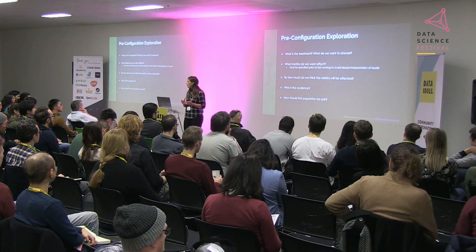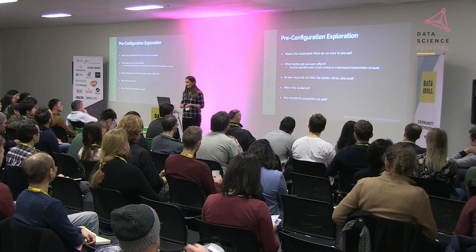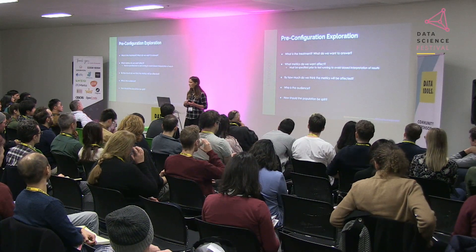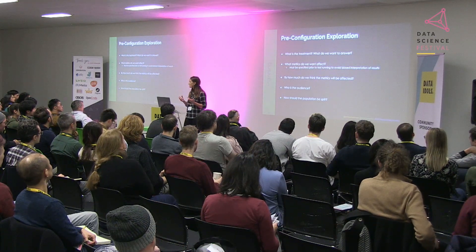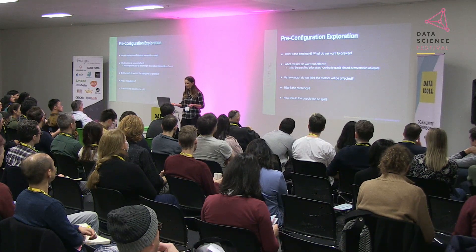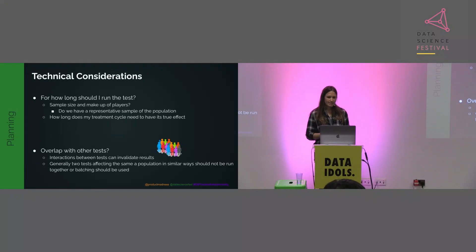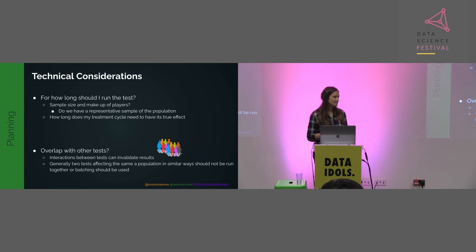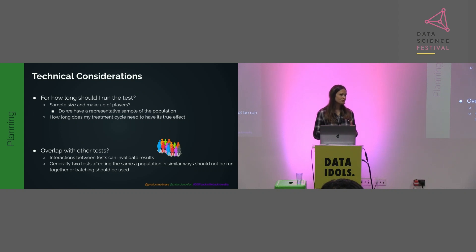We also consider who our audience is — are we rolling this out to the whole population or specific groups? And how should the population be split? Ideally a 50/50 split is great for sample size, but if something is quite risky we might be risk-averse and test on a much smaller group. Technical considerations include how long to run the test, whether we have a representative sample, how long the treatment cycle needs to run to see its true effect — we try to simulate this beforehand — and the overlap with other tests, since any interaction between tests could invalidate results.